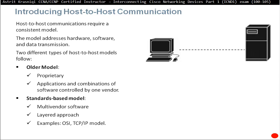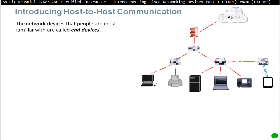The standard is the way to go. You don't really want anything proprietary — it's just going to cost more and it's not scalable. Now you can buy a router, switch, or any network device and you don't really care who's making it; they can work together because they follow the standards.